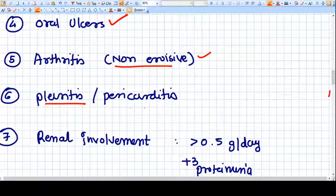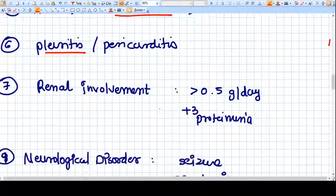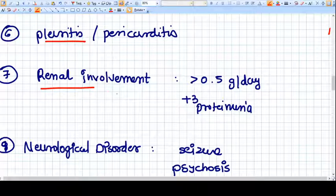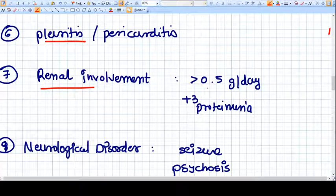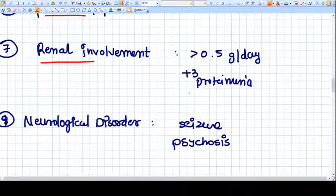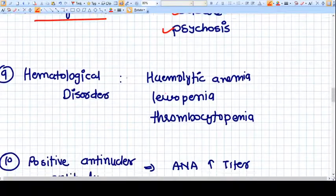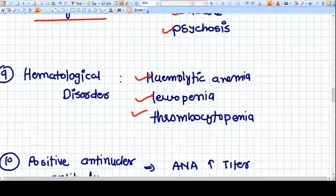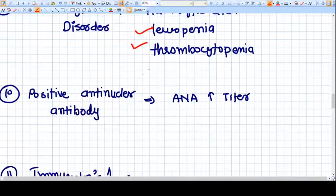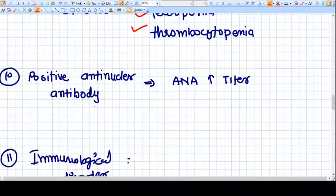Arthritis of non-erosive type involving more than two peripheral joints, evidence and symptoms of pleuritis or pericarditis, evidence of renal involvement like proteinuria more than 0.5 grams per day or plus 3 in dipstick, and neurological symptoms like seizures or psychosis. Hematologic disorders like anemia, leukopenia, thrombocytopenia. Biochemical criteria like positive anti-nuclear antibodies with increased titer.